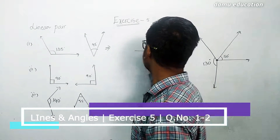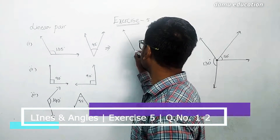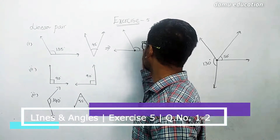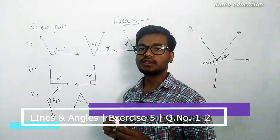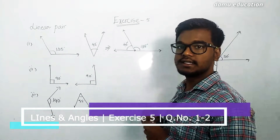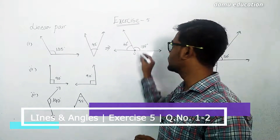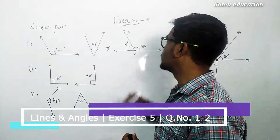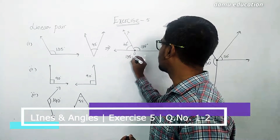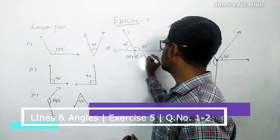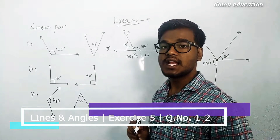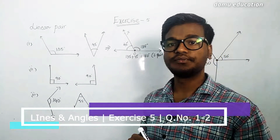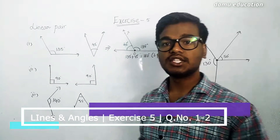We frame 135 and 45 — these two will have the same vertex, that is O, and the same arm OX. If you add 135 plus 45 you get 180 degrees, so this forms a linear pair. It is a linear pair of angles.